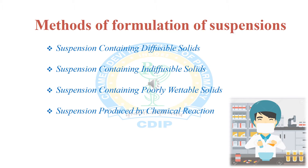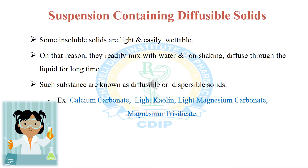Based on the type of solids, suspensions are divided into four types according to their method of dispensing: first, suspension containing diffusible solids; second, suspension containing indiffusible solids; third, suspension containing precipitate-forming or poorly wettable solids; and fourth, suspension produced by chemical reaction.